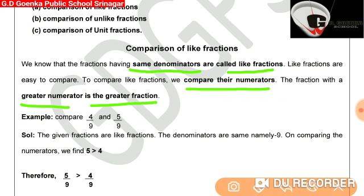For example, we will compare 4/9 and 5/9. Since these are like fractions, we will compare their numerators, that is 4 and 5. Clearly 5 is greater than 4. Therefore, the fraction with 5 as its numerator will be the greater fraction — that is, 5/9 will be greater than 4/9.